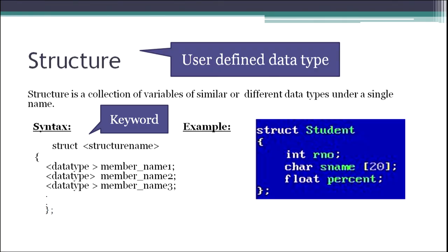Structure is a user-defined data type. Unlike array, it can store heterogeneous data, meaning it can store elements of different data types. Structure is user-defined because we can define it as per our requirements. It is a collection of variables of similar or different data types under a single name. We use the keyword struct to declare a structure, followed by the structure name. The members of the structure are declared within curly braces, each member declaration preceded by its data type and ended by a semicolon. The structure itself is also ended by a semicolon.